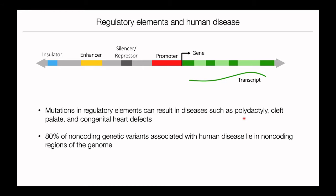These mutations presumably break down regulatory elements and lead to the disease phenotypes. Roughly 80% of non-coding genetic variants associated with human diseases lie in non-coding regions of the genome, and a good portion of these are in regulatory elements.